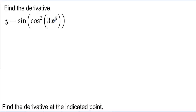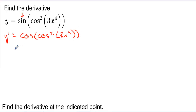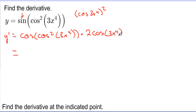Find the derivative of this complex function. Starting from the outside: the outside is sine, so y prime begins with cosine of cosine squared of 3x to the fourth. The next layer is the squared part, giving 2 times cosine of 3x to the fourth. The next inside function is cosine, so multiply by negative sine of 3x to the fourth. Finally, the innermost function is 3x to the fourth, so multiply by 12x cubed.